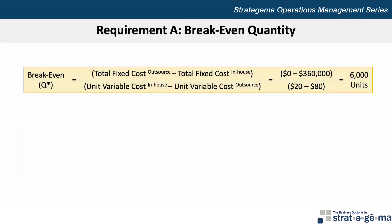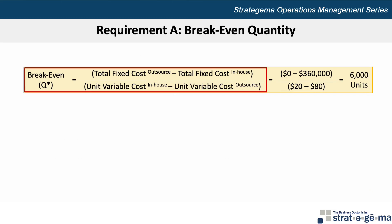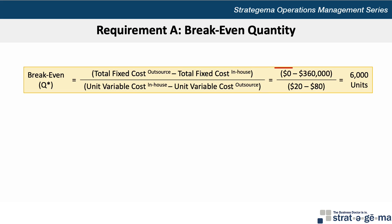To answer requirement A, we want to use the break-even formula where break-even quantity Q* is equal to the difference between the total fixed cost to outsource and produce in-house, divided by the difference between the unit in-house variable costs and the outsource variable cost. So we take 0 fixed outsource costs minus the $360,000 in-house fixed costs, and divide by the $20 per unit in-house variable cost minus the $80 outsource variable cost.